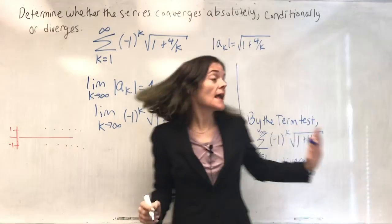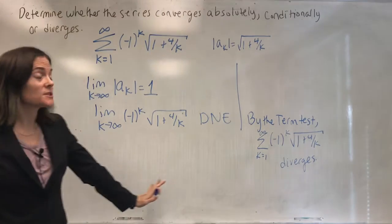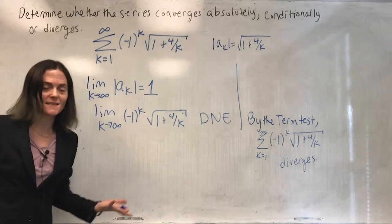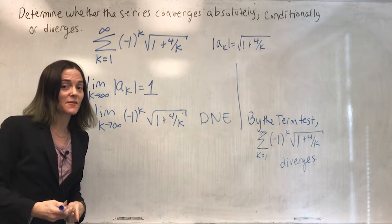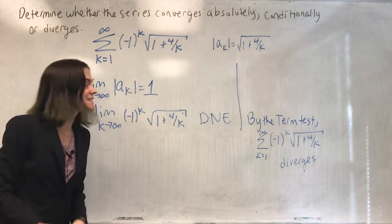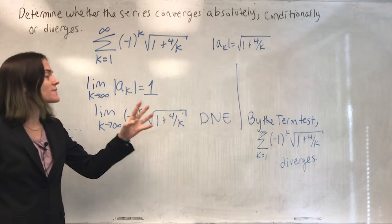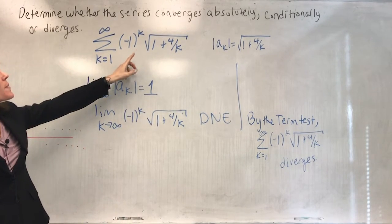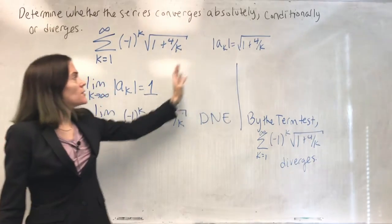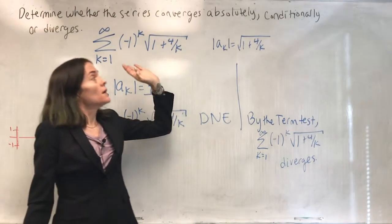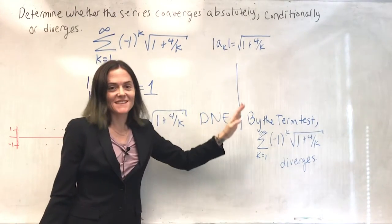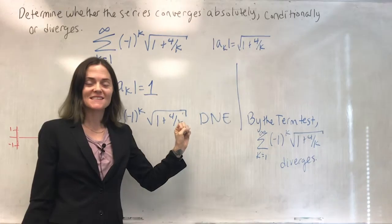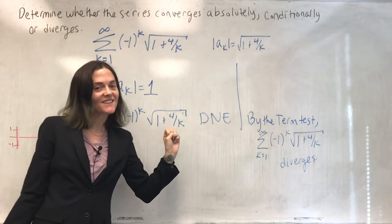This is why I check this first. If you get divergence from the term test — a quick glance to see if the terms go to zero — and if they do not, it diverges. Then you don't even have to worry about the absolute value or alternating series test. You know immediately what happens to the series: it diverges.